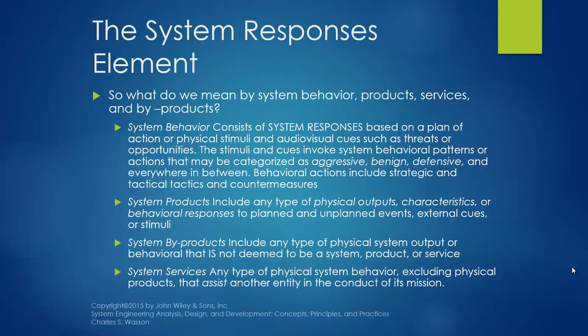The system products include any type of physical output characteristics or behavioral responses to planned and unplanned events and external cues or stimuli. The system byproducts include any type of physical system output or behavior that is not deemed to be a system product or a service. The system services include any type of physical system behavior, including physical products, that assist another entity in the conduct of its mission.